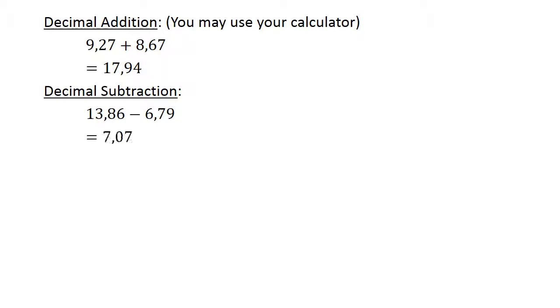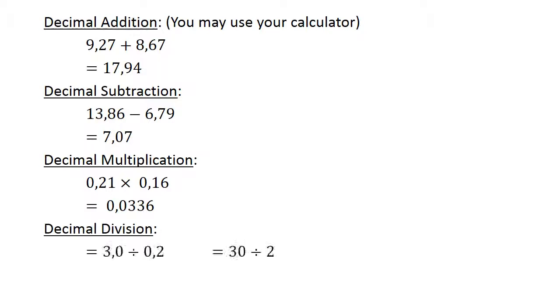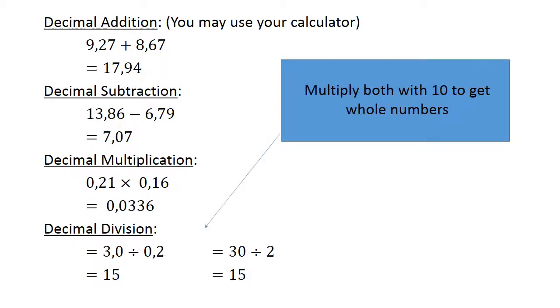Decimal multiplication: 0.21 times 0.16 equals 0.0336. Decimal division: 3.0 divided by 0.2. Multiply both with 10 to get whole numbers. 30 divided by 2 equals 15.